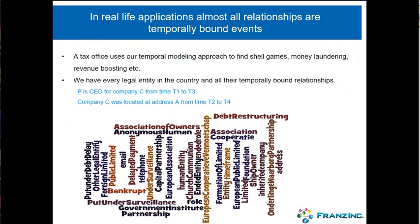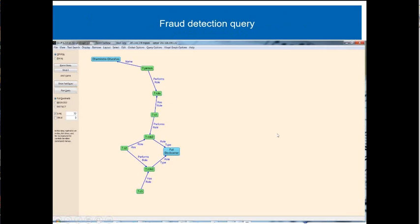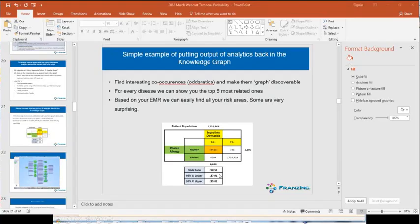Here's an example: say I have all the legal entities in a country — every person working for a company and the companies themselves, about 40 different types. We have temporal relations: a person was CEO of a company from time t1 to t3, and a company was located at a particular address from a certain time. For a whole bunch of predicates, instead of direct relationships, we have temporal relationships between these entities. So if you want to find how a particular network is built up — whether it's fraud or not — you can look at the influence networks in your set of entities.